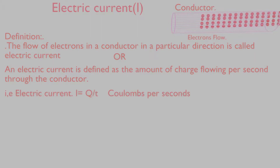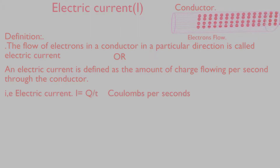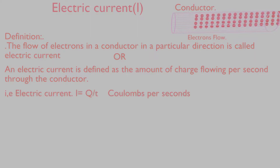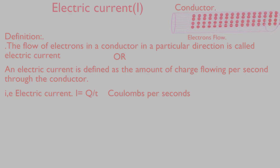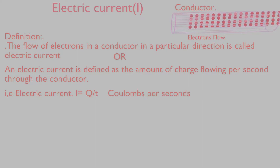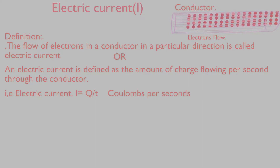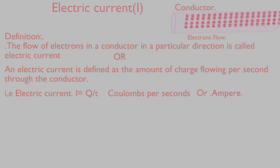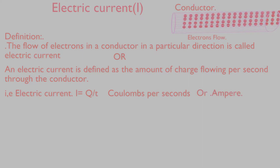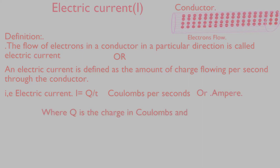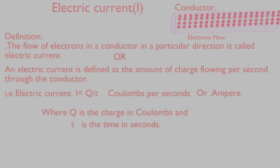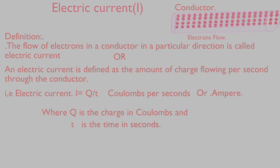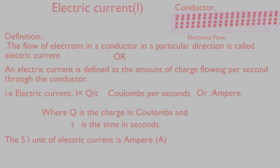That is, electric current I equals Q by T, measured in Coulombs per second, or Ampere. Where Q is the charge in Coulombs and T is the time in seconds.